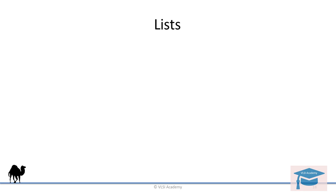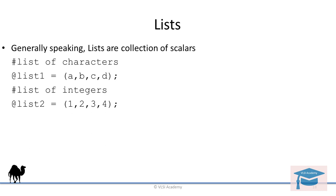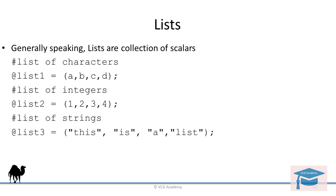Moving on — generally speaking, lists are collections of scalars. This is a list of characters. This is a list of integers. This is a list of strings. As you can see, you use the parentheses and comma operators to construct a list. Each value in the list is called a list element. List elements are indexed and ordered, and you can refer to each element by its position. From now on, we will refer to all arrays as lists, as this is common terminology in the Perl platform.